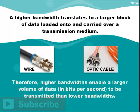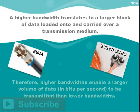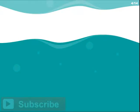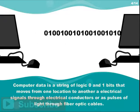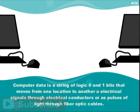Therefore, higher bandwidths enable a larger volume of data, in bits per second, to be transmitted than lower bandwidth. Computer data is a string of logic 1 and 0 bits that moves from one location to another as electrical signals through electrical conductors, or as pulses of light through fiber optic cables.